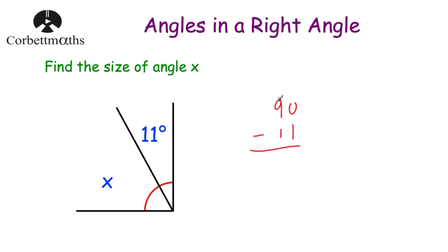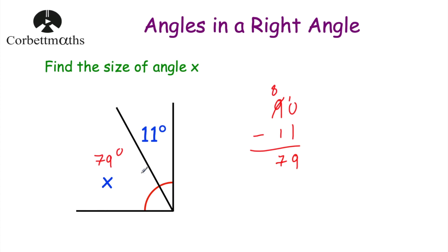0 take away 1 we can't do, so let's borrow. That's now 8 and that's now 10. 10 take away 1 is equal to 9, and 8 take away 1 is equal to 7. So that means x is equal to 79 degrees. We can check our answer: 79 degrees plus 11 degrees is equal to 90 degrees, which is the size of a right angle.